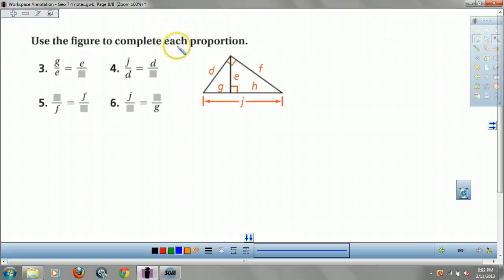Last but not least, use the figure to complete each proportion. G over E equals E over 1. Well, little triangle, medium triangle, could be E over H.